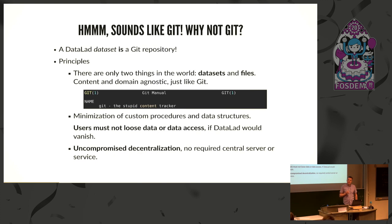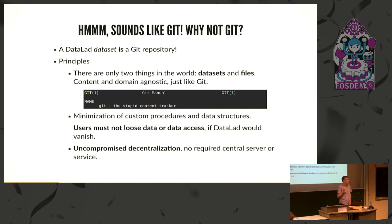There are a few principles we follow in the development of DataLad to make sure we don't ruin the features that a tool like git gives us. DataLad only recognizes two entities: files and datasets, which are collections of files — no other domain-specific specialization. We try to minimize custom procedures so that if DataLad, being somewhat academic, happens to die, its users can continue with the mature base still intact. We also try hard not to compromise the complete decentralization that git allows — no mandatory services.